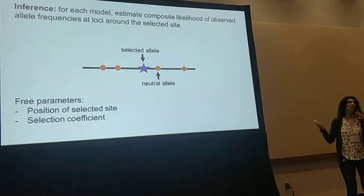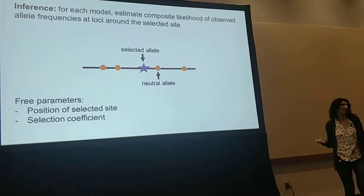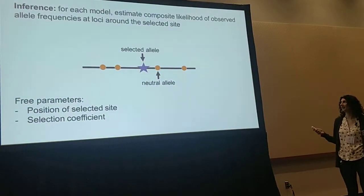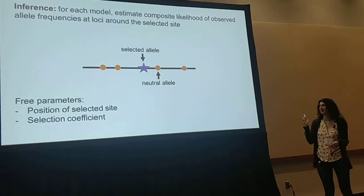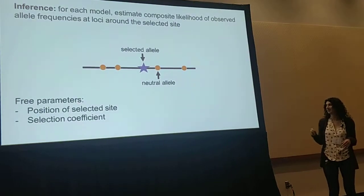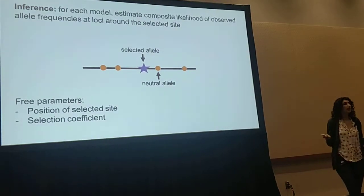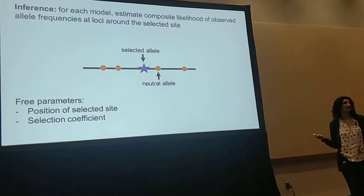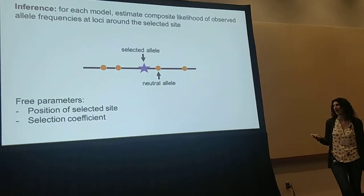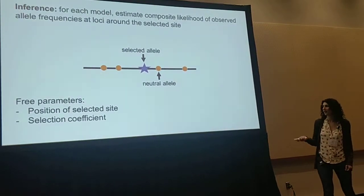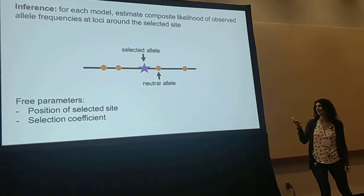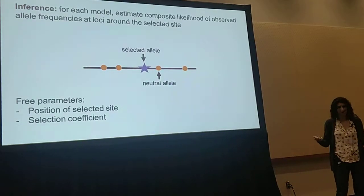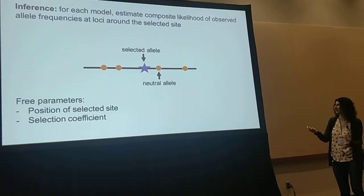We can model what these coalescent probabilities are going to be for each scenario of adaptive introgression and get these composite likelihoods. We have good power to distinguish between these different potential scenarios, and we can also estimate the position of the selected site and the selection coefficient.